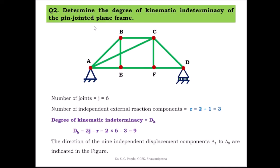Coming to the second problem: determine the degree of kinematic indeterminacy of a pin-jointed plane frame with joints A, B, C, D, E, F, where support A is a hinge and support D is a roller support. Using dk = 2j − r, find the number of joints and external reaction components.